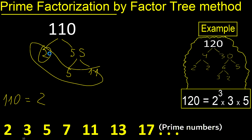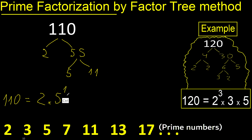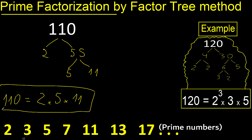Each factor appears 1 time, so each has an exponent of 1. Therefore the prime factorization is 2¹ × 5¹ × 11¹, which equals the same number. Each prime factor occurs 1 time.